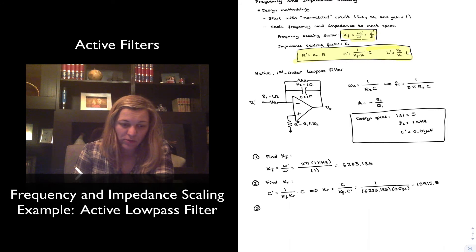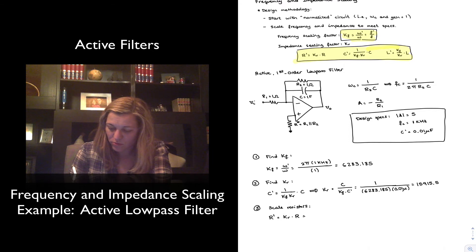So finally, I can go ahead and scale my resistors. So I have that my R prime is going to be equal to KR times R, or 15,915.5 times 1,